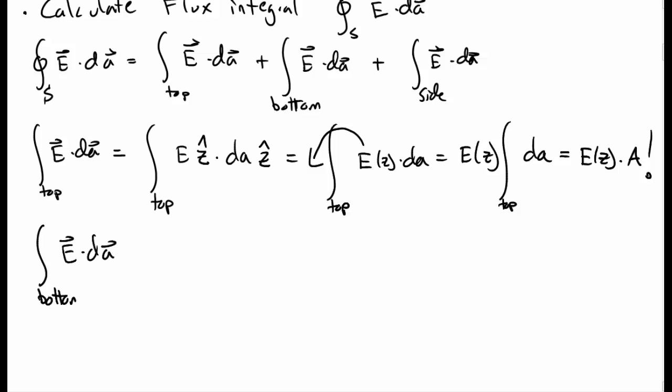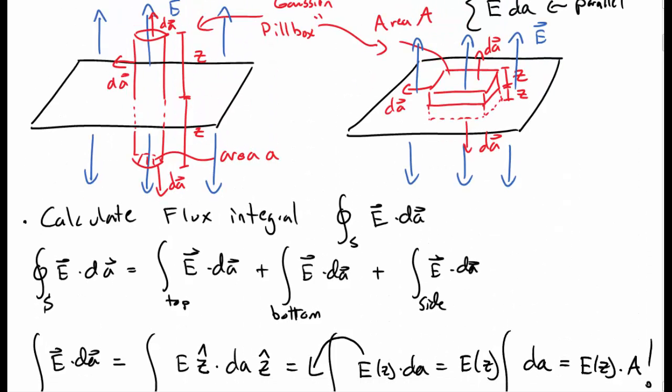By a similar reasoning, you can find that the E dot dA for the bottom, the surface integral of that, is the same thing, E times A. And again, note that the electric field and dA are still parallel below on the bottom of the surface because the electric field, again, points down as does dA.